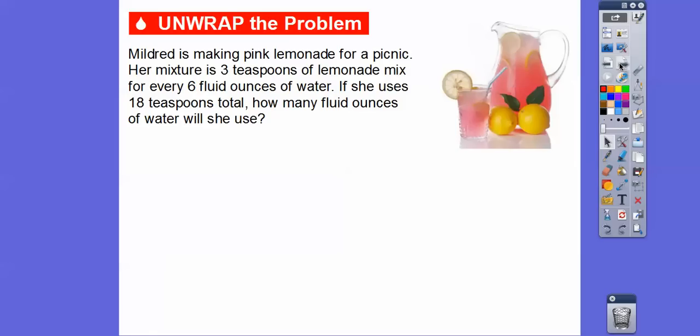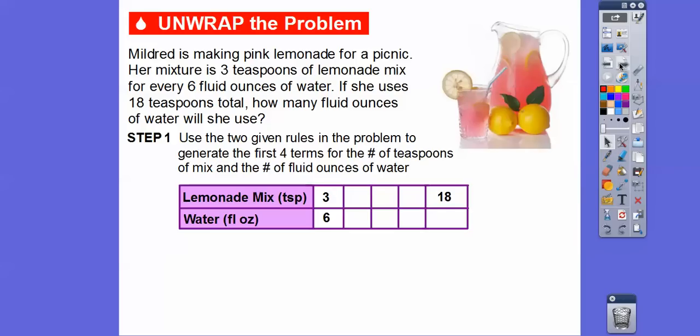We're going to try that with Mildred here. Mildred is making some pink lemonade for a picnic — don't you like pink lemonade? I sure do, especially in the summertime. Her mixture is three teaspoons of lemonade mix for every six fluid ounces of water. If she uses 18 teaspoons total, how many fluid ounces of water will she use? We're going to use the two given rules in the problem to generate the first four terms. Remember, this little symbol means the word 'number.'